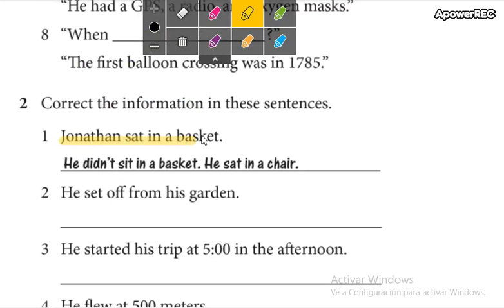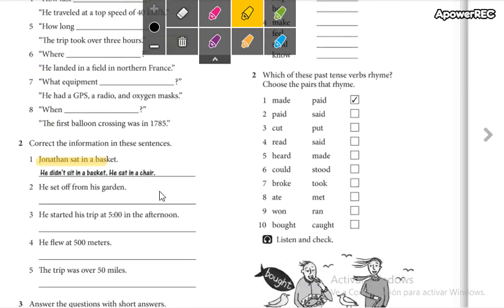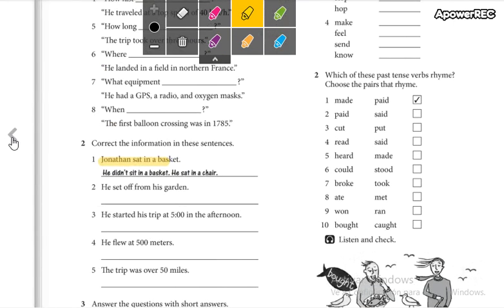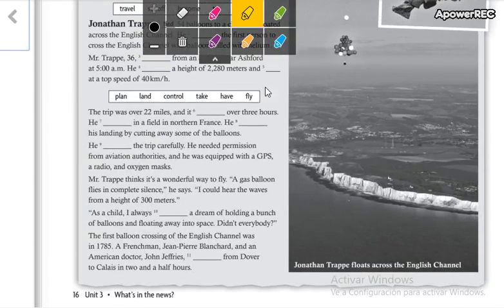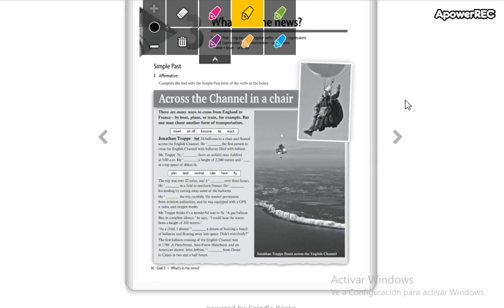He didn't sit. No se sentó en una canasta, se sentó en una silla. ¿Cómo van a saber cómo corregir las oraciones? Tienen que seguir el texto que hicieron ayer. Todo es sobre el texto.